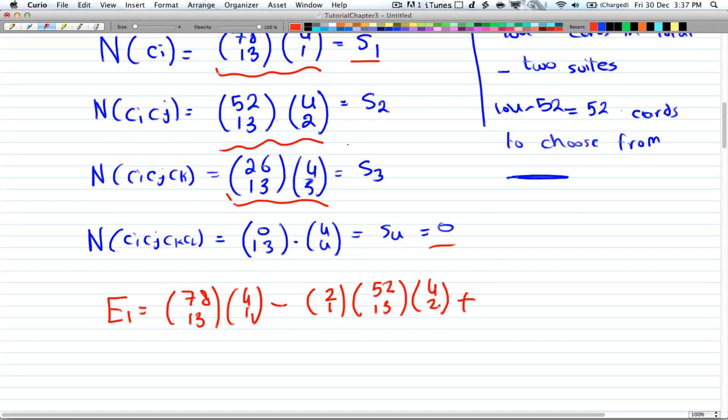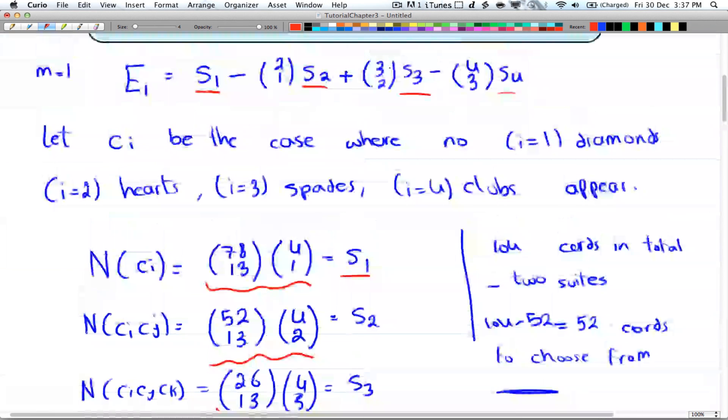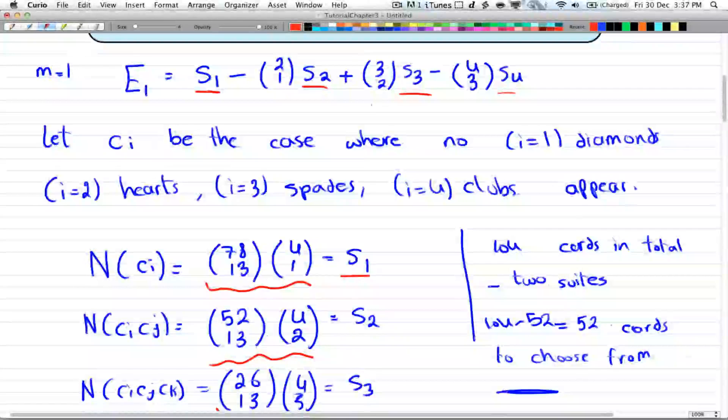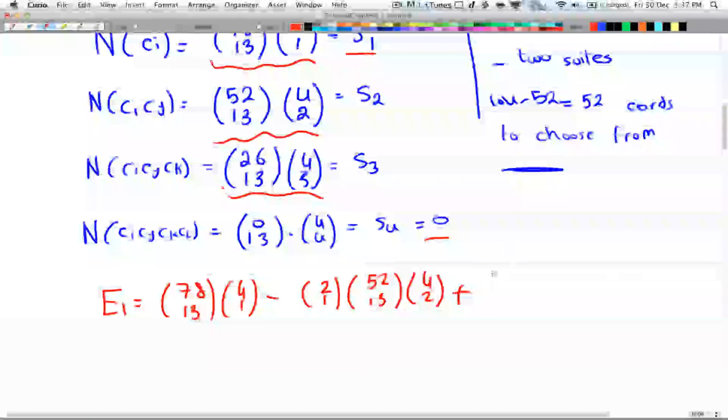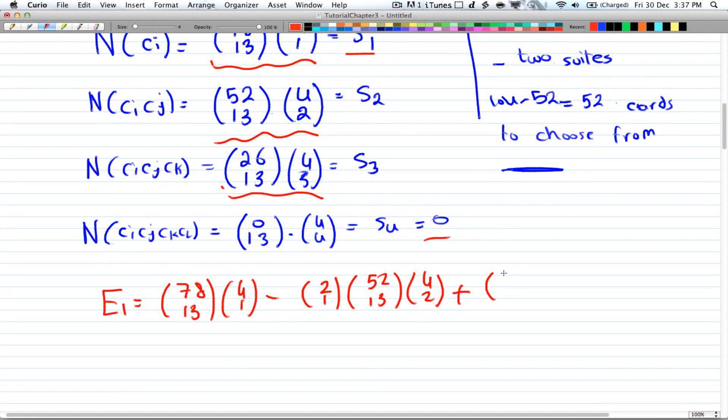Alright, plus 3 choose 2 times s_3. So over here, you have 3 choose 2 times 26 choose 13 times 4 choose 2. And that will be minus 0. And that's it. And that's our case where we get exactly 1 void.